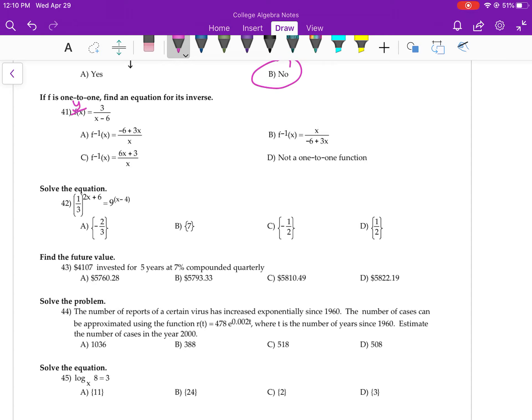So if this is Y, I'm going to swap X and Y. I'm going to multiply both sides by Y minus 6. I'm going to divide by X. I'm going to add 6 over. That answer looks different than theirs, but if you get a common denominator of X, which answer is it going to be? It's going to be C.